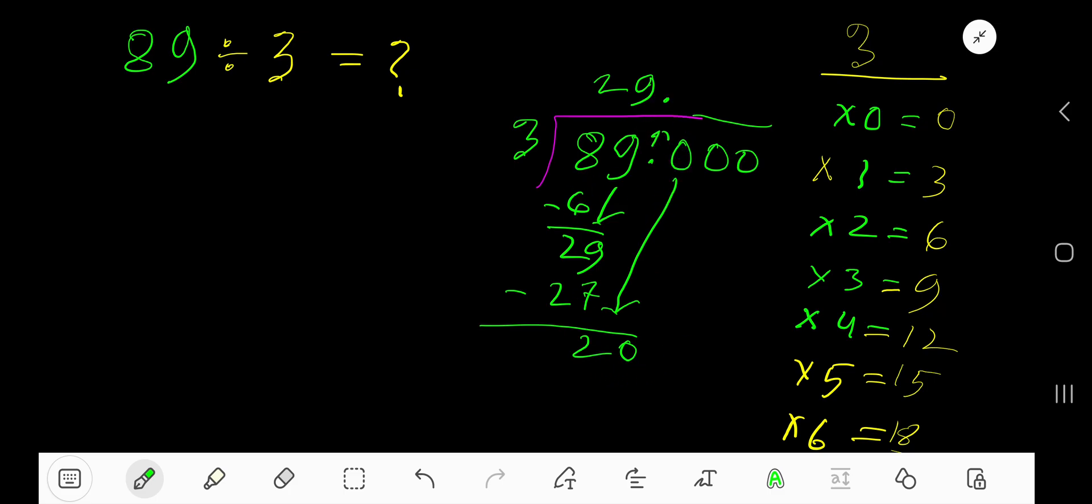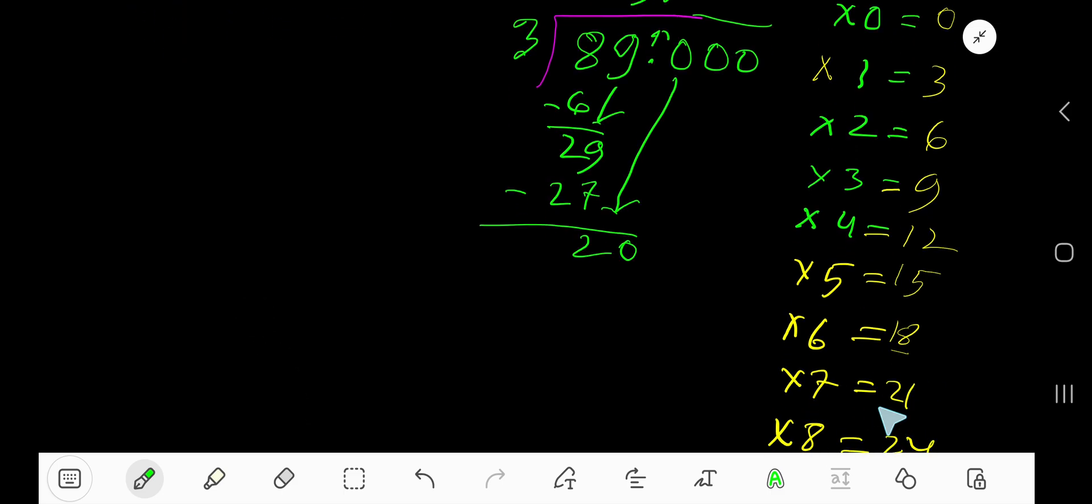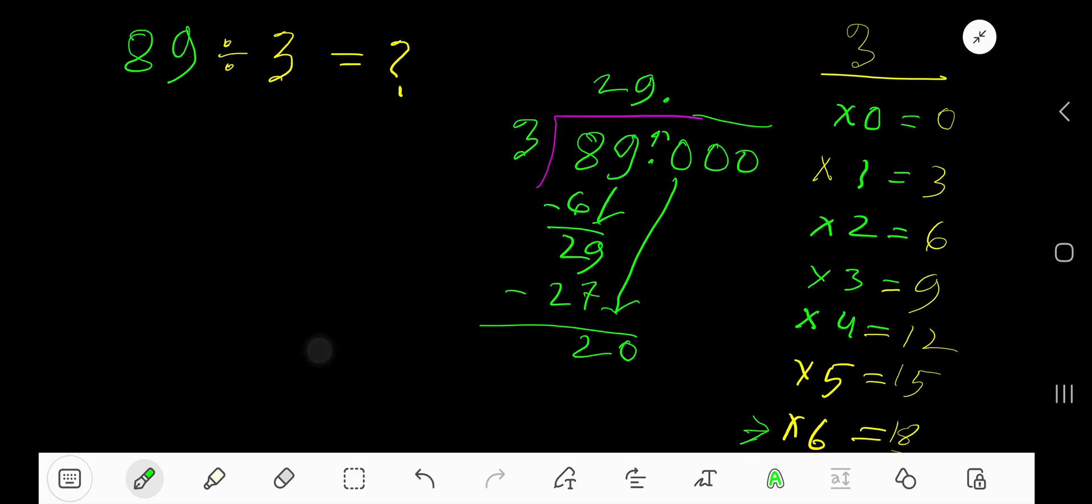3 goes into 20 how many times? 6 times. 6 times 3 is 18. Subtract. 2.